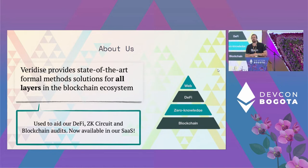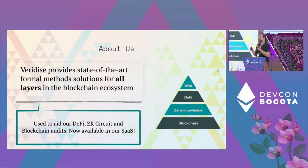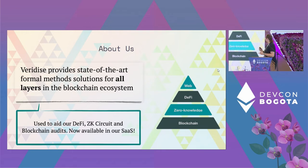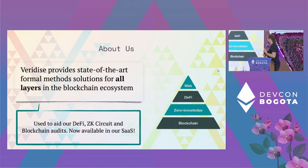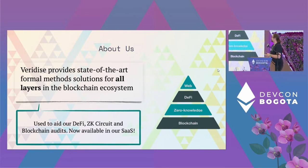A little bit more about us: we are a security company. We provide audits and also provide tooling in order to find vulnerabilities in all aspects of the blockchain. We build tools to help ourselves and other people find bugs in DeFi applications, blockchains, and what we're going to be talking about today — zero knowledge circuits. We're very interested in making our tooling available, and today I'm going to talk specifically about our open source tooling and not about the tooling that we're providing in our security-as-a-service suite.